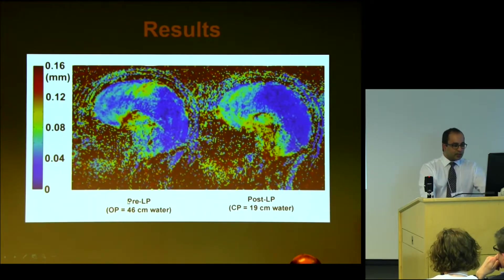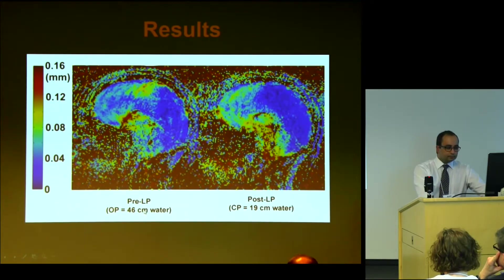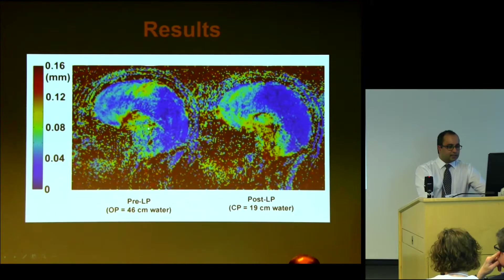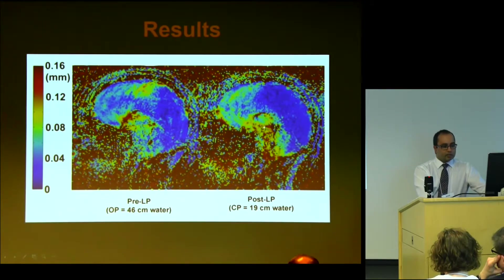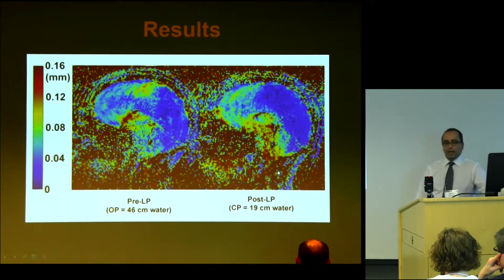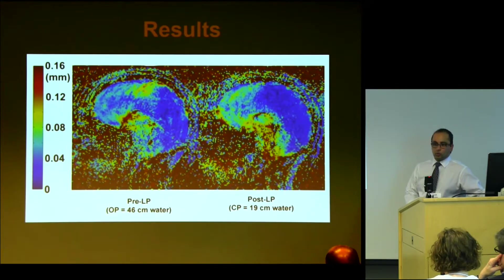Here's a sample patient with an opening pressure of 46 centimeters water. The DENSE scan right before the lumbar puncture shows not much difference in peak displacement in the pons relative to some supratentorial parts of the brain. Then post-lumbar puncture, when we've dropped the pressure to 19 centimeters water, we can see much greater pulsatility in the posterior fossa structures — particularly the pons and upper cervical cord — very similar to what we see in the control group.